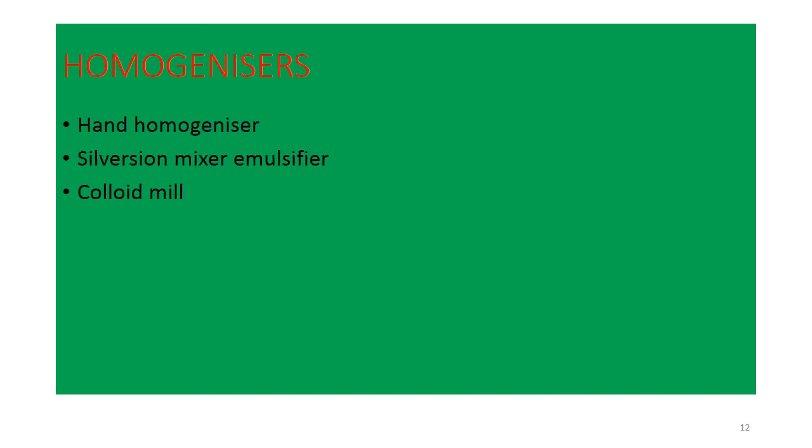Homogenizer 3 types के होते हैं: hand homogenizer, silver/sun mixer emulsifier, और colloid mill. कल हम discuss करेंगे अलग-अलग mixers के बारे में — liquid mixer, powder mixer, और semi-solid mixer के बारे में. Thank you very much.